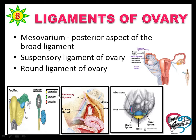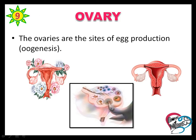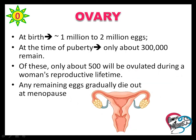The ligaments of the ovaries are the mesovarium, suspensory ligament of the ovary, and round ligament of the ovary. The ovaries are the site of egg production, that is oogenesis. At birth of a female baby, approximately 1 to 2 million eggs are present in the ovary. At the time of puberty, 300,000 eggs only remain in the ovary. Of those, only about 500 will ovulate during a woman's reproductive life, and the remaining eggs gradually die out at menopause.